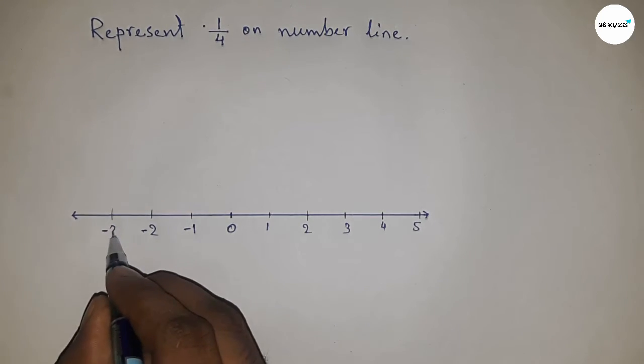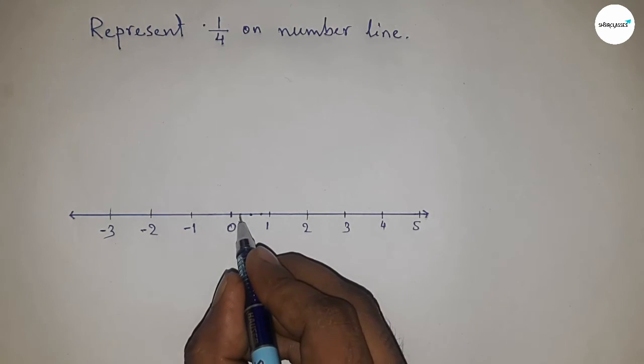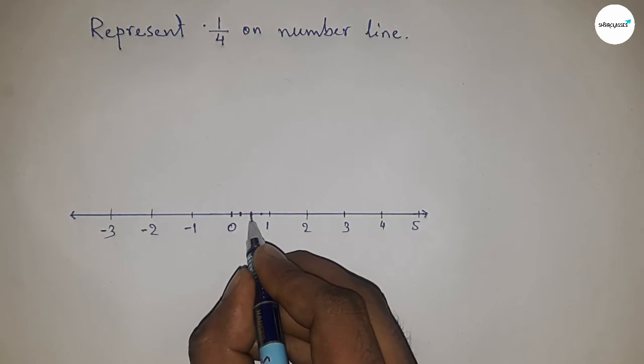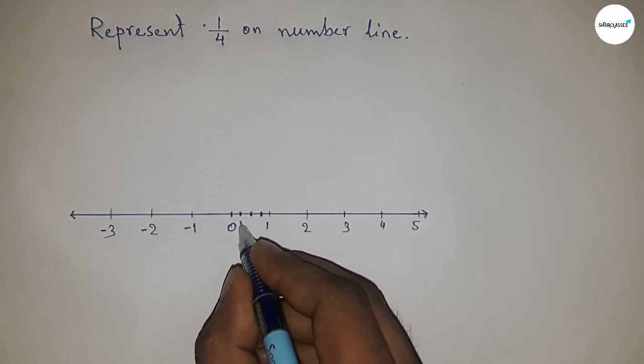On this side, minus one, minus two, minus three, and so on. Next, we have to divide the length between zero to one into four equal parts. So divide the length into four equal parts.